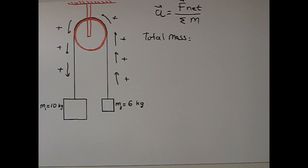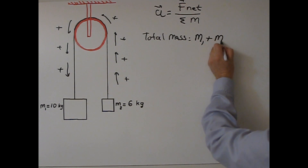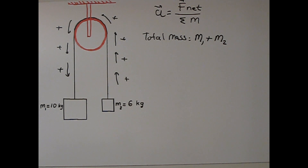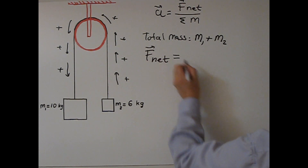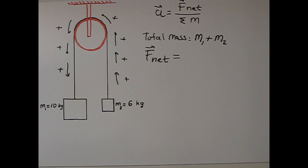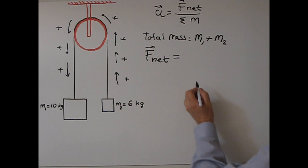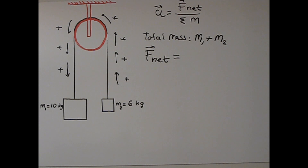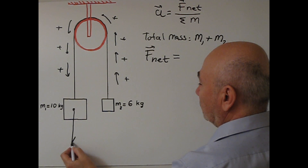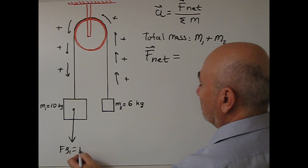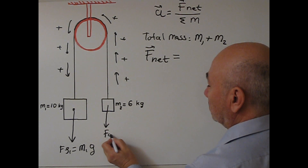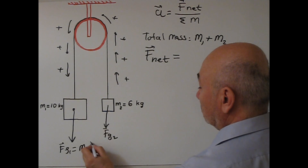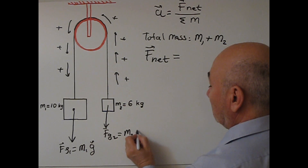Because they move together, the total mass is M1 plus M2 — the mass of the string is ignored. So next, what is the net force acting on the system? The net force is the vector sum of all forces acting on the system. There is one force FG1 equal to M1 times G, and FG2 is smaller than FG1.